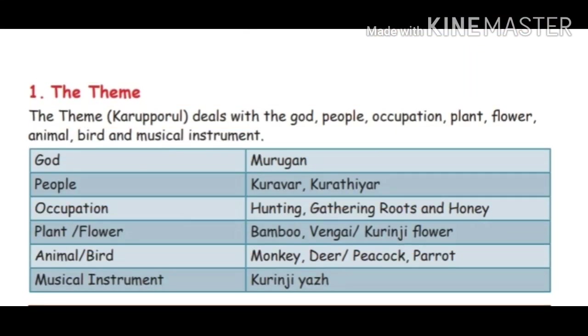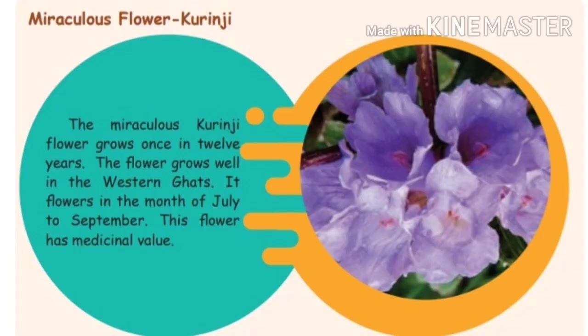Let us see the main theme of Kurunji land. God: Murugan. People: Kuravar and Kurathiyar. Occupation: hunting, gathering roots and honey. Plant and flowers: bamboo, Vengai, Kurunji flower. Animals: monkey, deer. Birds: peacock, parrot. Musical instrument: Kurunji yazh. The miraculous Kurunji flower blooms once in twelve years. It grows well in the Western Ghats and flowers from July to September. This flower has medicinal value.